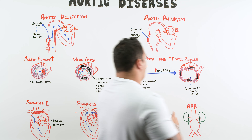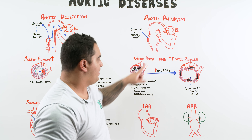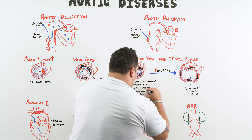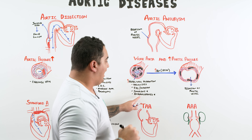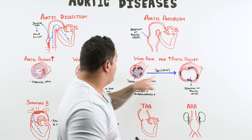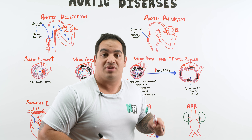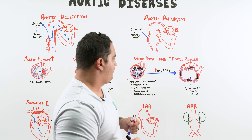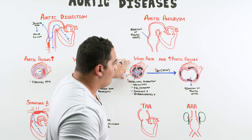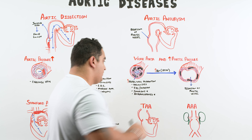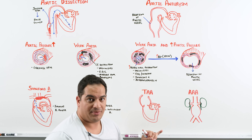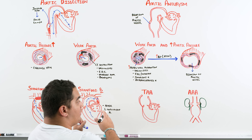For aortic aneurysms, look for smoking and atherosclerosis — very common and very commonly combined with high blood pressure. For aortic dissections, high blood pressure is the most common cause, but connective tissue destruction is also a contributor. Aortic aneurysms result from vessel wall destruction combined with high blood pressure causing dilation.